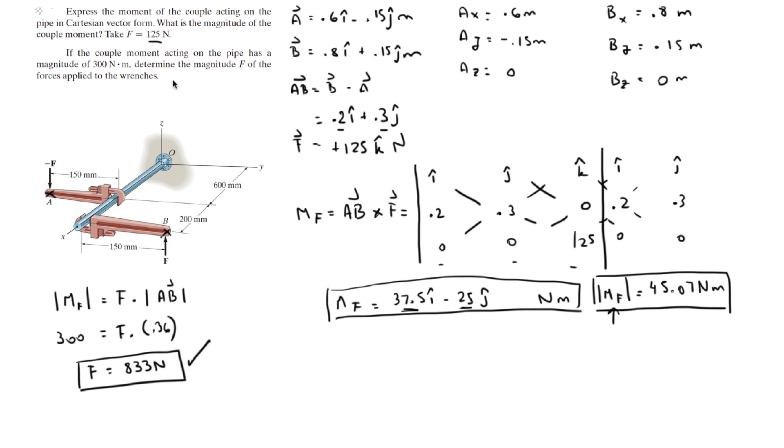833 newtons is the final answer for this one, and the magnitude and Cartesian vector form for the magnitude of the couple moment is the final answer for this one.